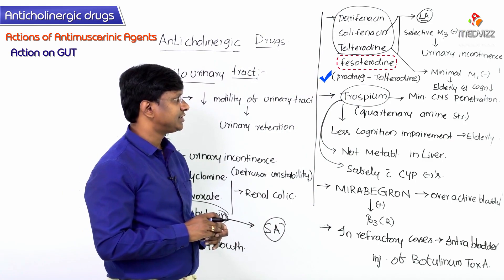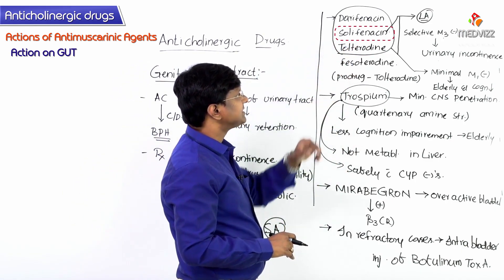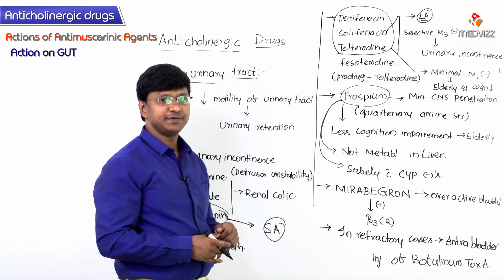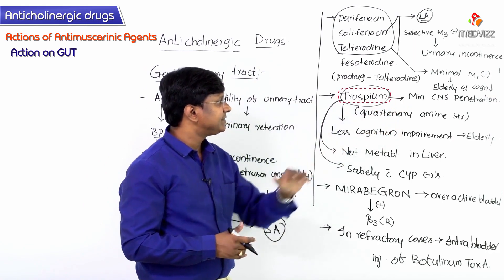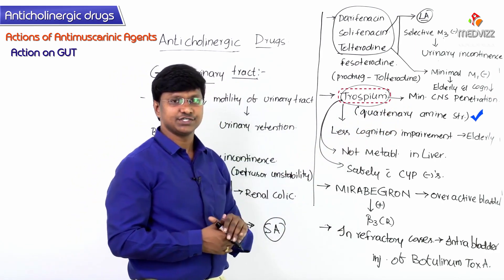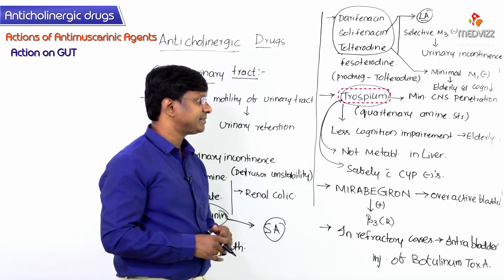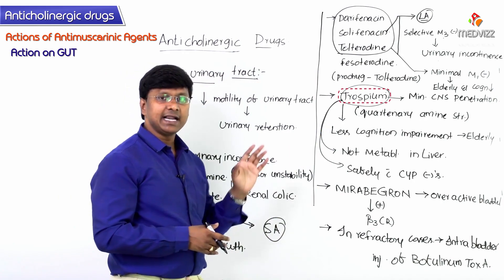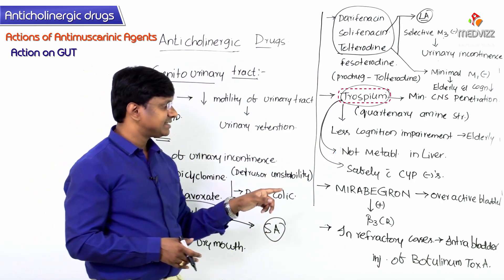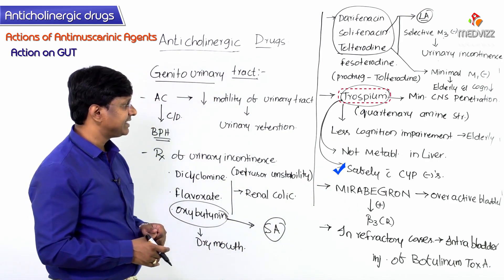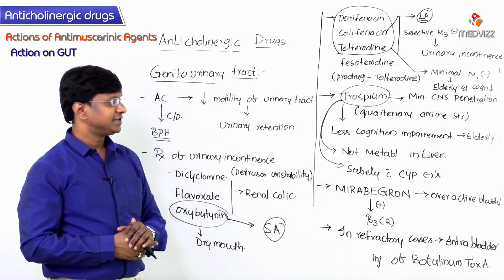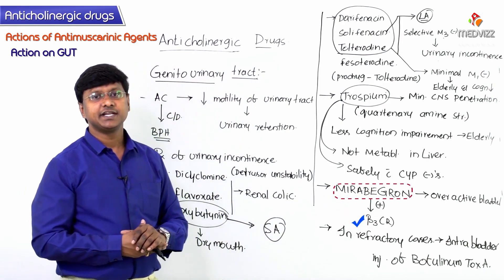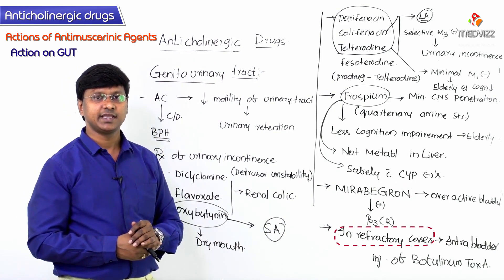Solifenacin is a long-acting drug. Trospium has minimal CNS penetration due to its quaternary amine structure, making it safe in elderly individuals with less cognitive impairment. Trospium is not metabolized in the liver and can be safely used with CYP inhibitors. The newer drug mirabegron acts by stimulating beta-3 receptors for overactive bladder. In refractory cases, intrabladder injection of botulinum toxin A can be used.